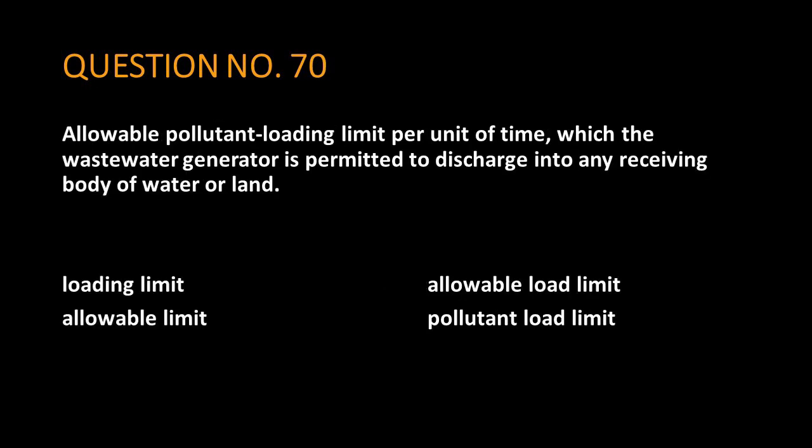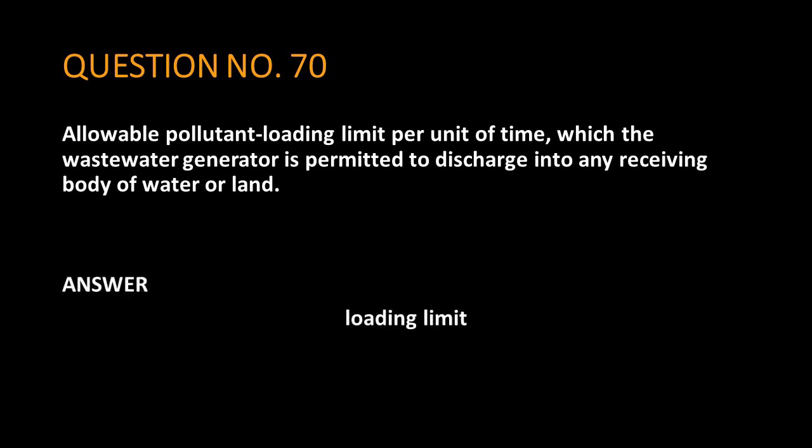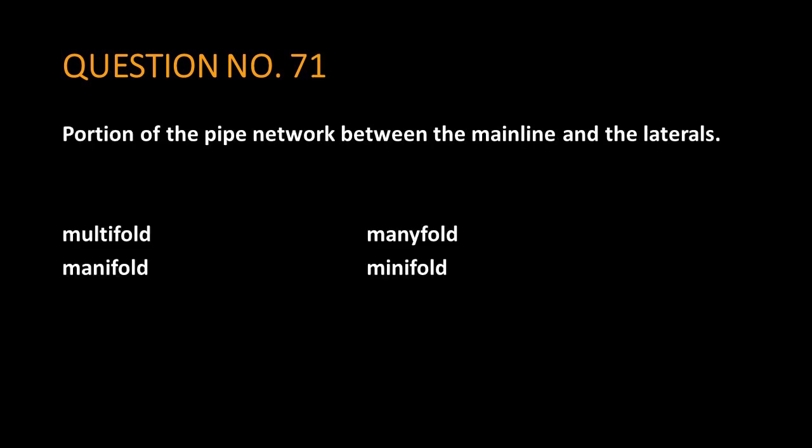Question number 70: allowable pollutant loading limit per unit of time which the wastewater generator is permitted to discharge into any receiving body of water or land. The answer is: loading limit. Question number 71: portion of the pipe network between the mainline and the laterals. The answer is: manifold.